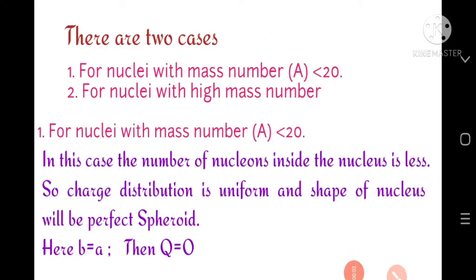There are two possibilities. When the mass number of the nucleus is small, there is no deviation — the nucleus is spherical in shape. In this case, b equals a, and therefore the electric quadrupole moment Q is zero.